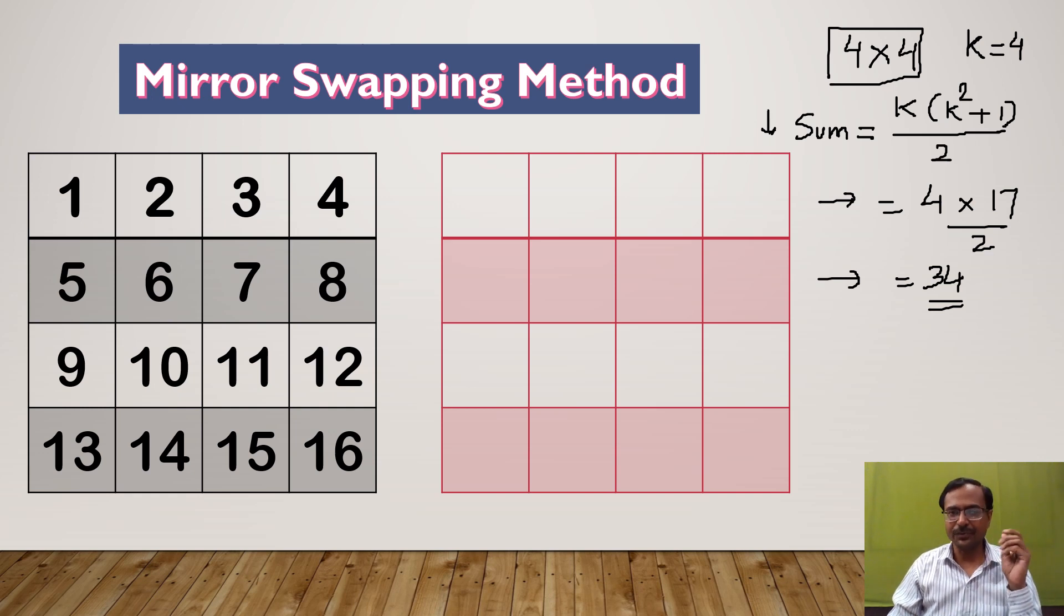Now the sum of the four numbers which you are going to get is 34. On the left hand side, you can see here I have drawn a simple matrix of 16 numbers in order: 1, 2, 3, 4, 5, 6, 7, 8, 9, 10, 11, 12, 13, 14, 15, 16. We need to make minor changes in this matrix in order to get our magic square.